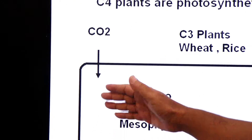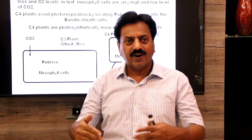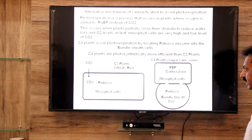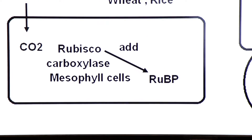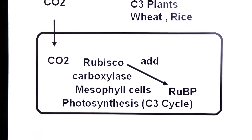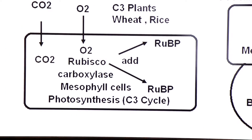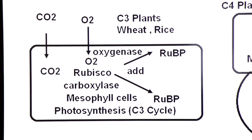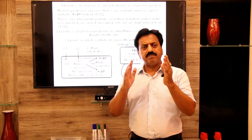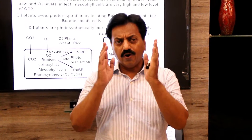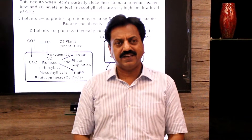Now, if carbon dioxide enters C3 plants, Rubisco performs both carboxylase and oxygenase activity. If carbon dioxide is added, Rubisco adds CO2 to RuBP — this is called carboxylase activity — resulting in photosynthesis via the C3 cycle. But if oxygen is added, Rubisco adds oxygen to RuBP — this oxygenase activity results in the wasteful process of photorespiration. So in C3 plant mesophyll cells, Rubisco fixes both CO2 and O2, and when it fixes oxygen with RuBP, photorespiration begins.